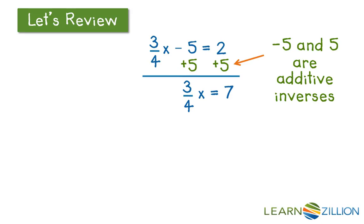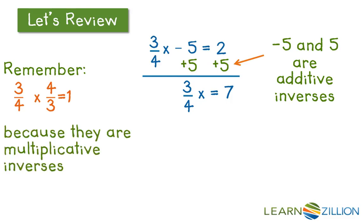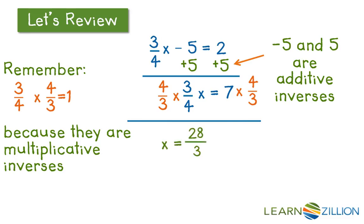Once we are done with that, we need to figure out what we need to multiply the left side by to get x by itself. Remember that 3/4 times 4/3 is equal to 1 because they are multiplicative inverses of each other. So we need to multiply both sides by 4/3. When we do that, on the left side we will just be left with x, and on the right side we will be left with 28/3. Now we need to check our work. If we substitute 28/3 into our original equation, we have 3/4 times 28/3 minus 5 is equal to 2. The 3's cancel out, giving us 28/4 which is 7, and 7 minus 5 equals 2. So our answer of 28/3 is correct.